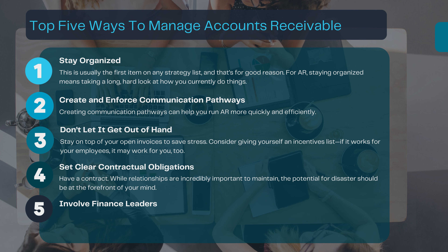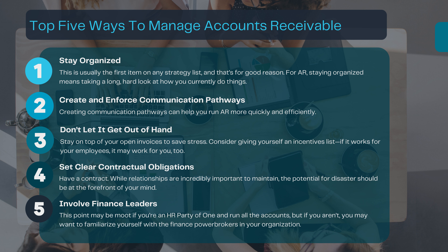And finally, number five: involve finance leaders. This point may be moot if you're an HR party of one and run all the accounts, but if you aren't, you may want to familiarize yourself with the finance power brokers in your organization. Who is writing checks and depositing checks? That's someone you need to know if you don't see that face in the mirror. Also, clarify if there is a system to double check or triple check things. AR is critical to your organization's success, so a standardized system that ensures accuracy and efficiency is vital. There's another pro to involving other leaders — they can provide backup if you need it. You shouldn't need it if you're following these other steps, but it's nice to have an ace in your back pocket.